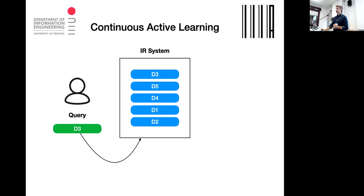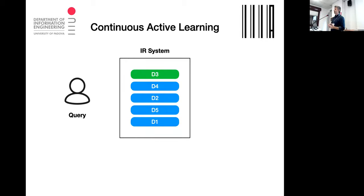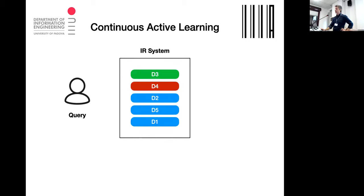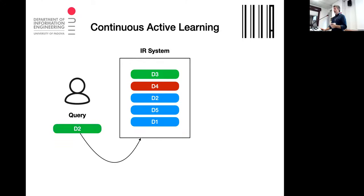The user reads documents and gives explicit relevance feedback, which is stored. The system then has time to re-rank everything. You can also work in batches — some strategies use 5, 10, or 20 documents before re-updating. This needs experimental evaluation to check whether batches of 5, 10, or 1 document work better. The user again provides positive or negative feedback, and you continue. In this talk I'll discuss binary relevance feedback — either relevant or non-relevant — though graded relevance can also be used.